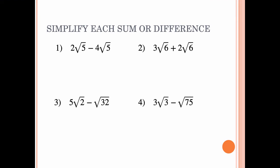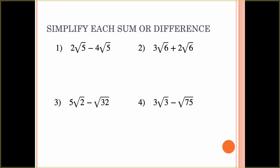Simplify each sum or difference. For 2 square roots of 5 minus 4 square roots of 5: both have square root of 5, so work with the coefficients — 2 minus 4 is negative 2, giving negative 2 square roots of 5. For 3 square roots of 6 plus 2 square roots of 6: both have square root of 6, so add the coefficients to get 5 square roots of 6.